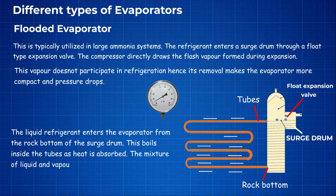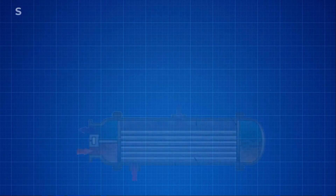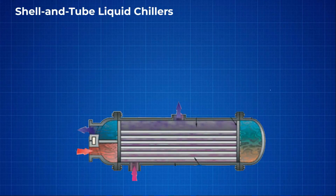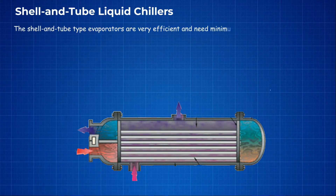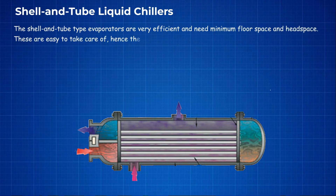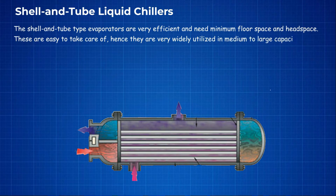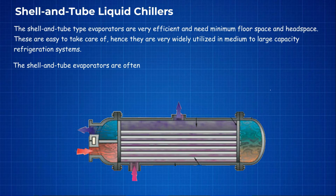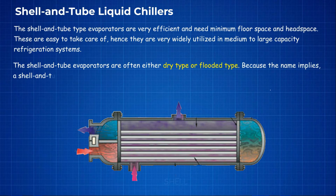The mixture of liquid and vapor bubbles rises up along the evaporator tubes. Shell and tube liquid chillers: the shell and tube type evaporators are very efficient and need minimum floor space and headspace. These are easy to maintain, hence they are very widely utilized in medium to large capacity refrigeration systems. Shell and tube evaporators are often either dry type or flooded type.